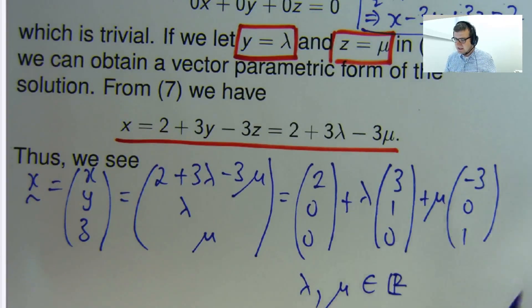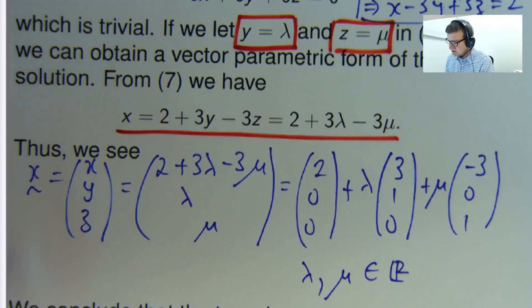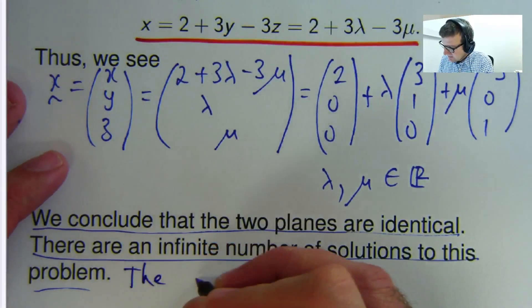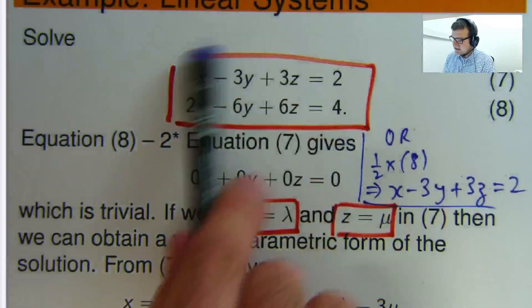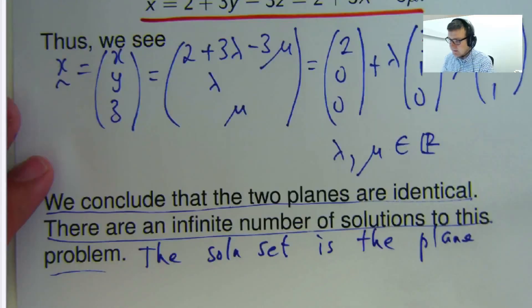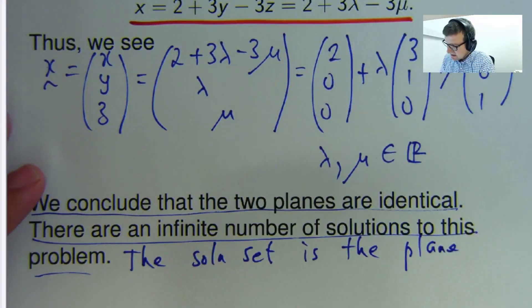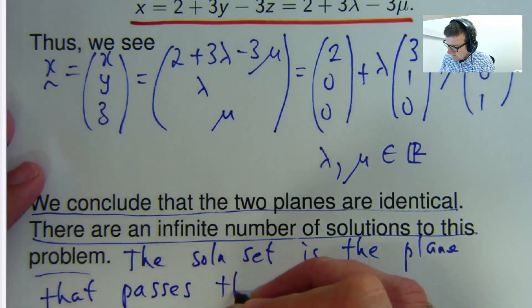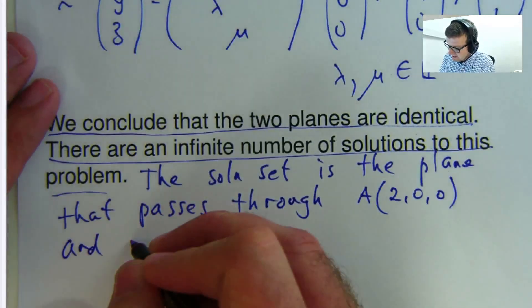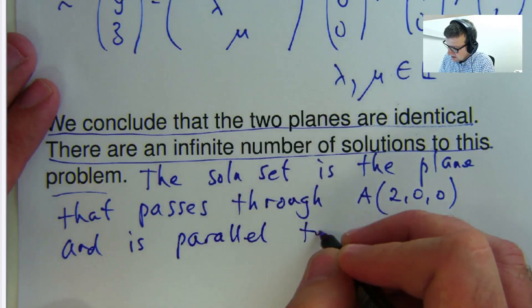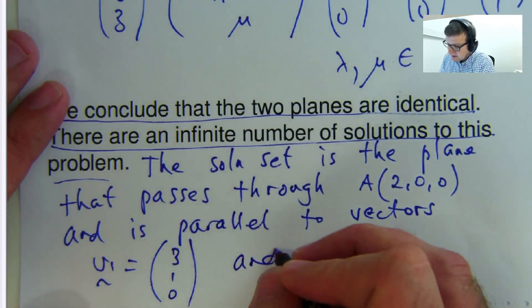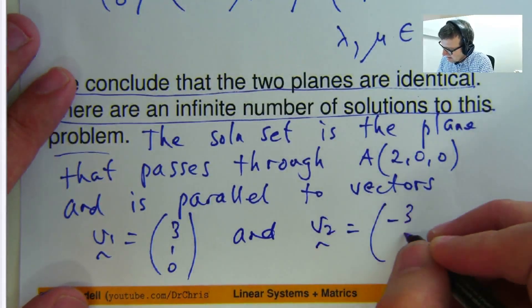So what does this tell you? It tells you, first of all that, yes, the two planes are identical. There are an infinite number of solutions to this problem, and the solution is basically this, the set of points on this plane, which it's the plane that passes through this point, and is parallel to this vector and this vector, parallel to vectors, say, v1, 3, 1, 0, and v2, negative 3, 0, 1.